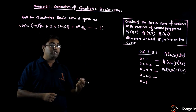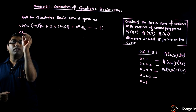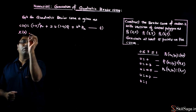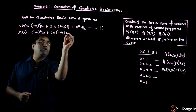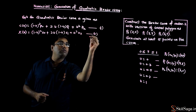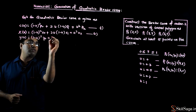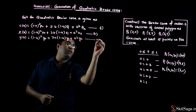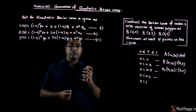X coefficient और y coefficient calculate करने के लिए इस equation को modify करेंगे। X coefficient calculate करने के लिए equation 2 use करेंगे और y coefficient calculate करने के लिए equation 3 use करेंगे। First point calculate करते हैं for u = 0। Equation 2 में u = 0 रखने पर: x(0) = (1−0)² × x0 + 2×0×(1−0)×x1 + 0²×x2 = 1×x0 + 0 + 0 = x0 = 0।